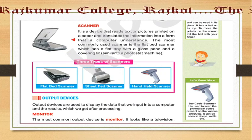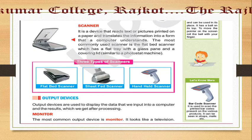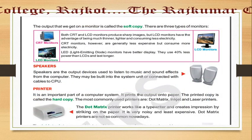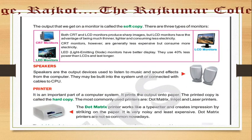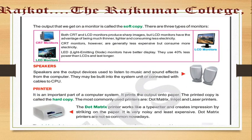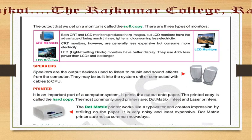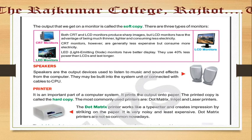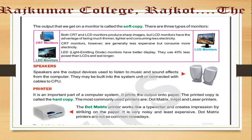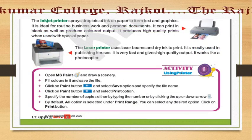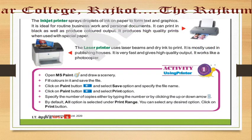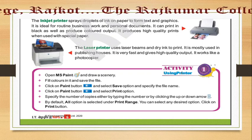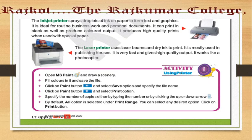Then output devices. Monitor — the most common output device is a monitor; it looks like a television. There are two types: CRT monitor, LED monitor, and LCD monitor. Then speaker — it is also an output device, used to listen to music or sound effects from the computer. Then printer — you can take a hard copy with it. There are different printers; with a laser printer, you get better quality output than other printers.